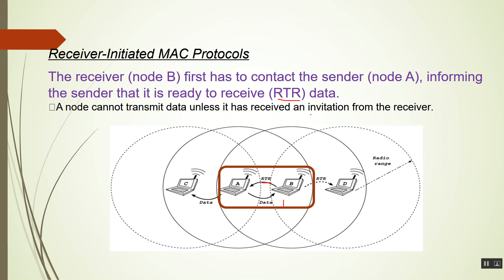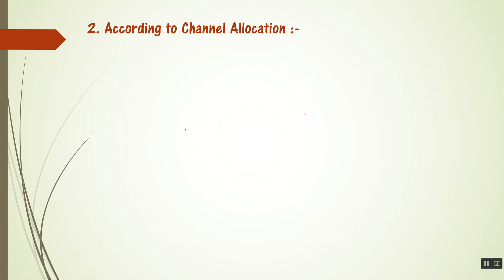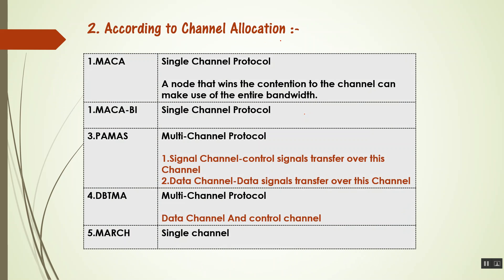Now we will see the difference according to channel allocation. MACA is a single-channel protocol — in single-channel protocols, a node that wins contention to the channel can use the entire bandwidth. MACA-BI is also a single-channel protocol. PAMAS is a multi-channel protocol with a signaling channel and a data channel: control signals transfer over the signaling channel and data signals over the data channel. DBTMA is also a multi-channel protocol with a data channel and a control channel. MARCH is a single-channel protocol.